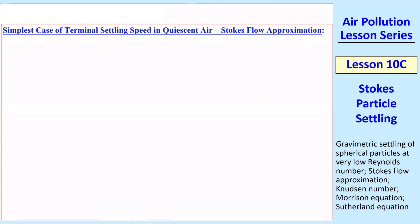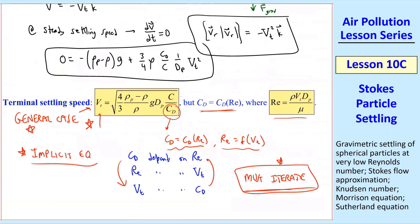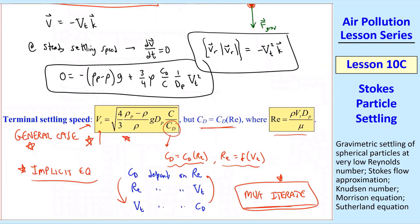Now I'm going to do the simplest case of terminal settling speed in quiescent air, and that is if we make the Stokes flow approximation. I must emphasize that this is an approximation. Pretty much everything we do in engineering is an approximation, but I mean this is even an approximation of this general equation that we have.